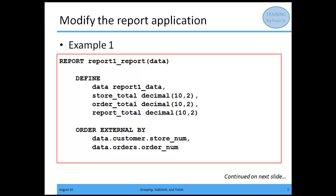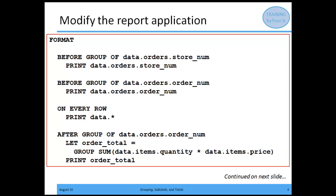Further down in that report block, we can start in our format with before group. So before group of data.orders.storenum, I want to print data.orders.storenum. The reason I'm printing this out is that when you're doing any sort of grouping, you want to have an introduction before the rows are printed out — a label or a line that says store number 101. So I'm adding my before groups to capture the store number and the order number of the rows that are going to be following.